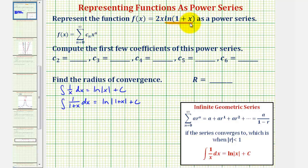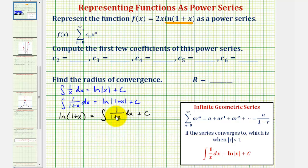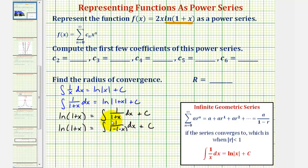We'll first focus on the natural log part of the function. If we can write that as a power series, we can then multiply by 2x. From this, natural log of (1+x) equals the integral of 1/(1+x) dx + c. Now we'll rewrite the integrand to fit the geometric series formula by writing it as 1/(1 − (−x)).